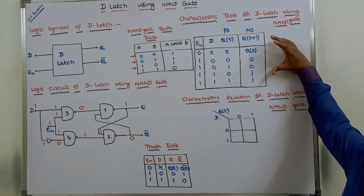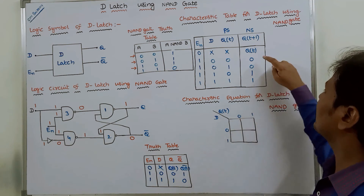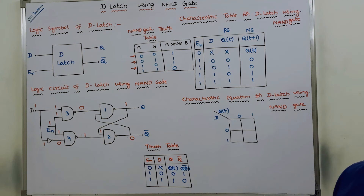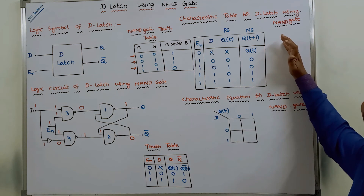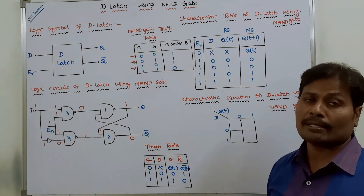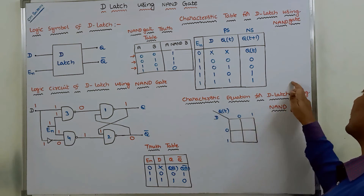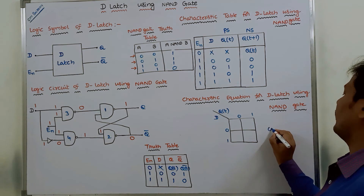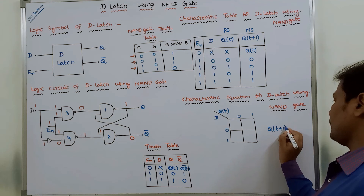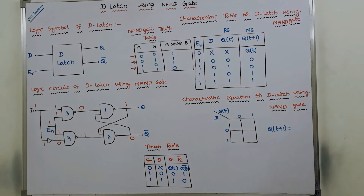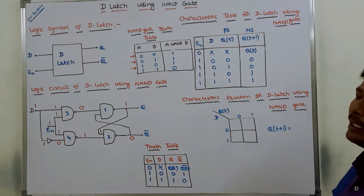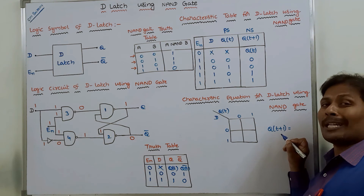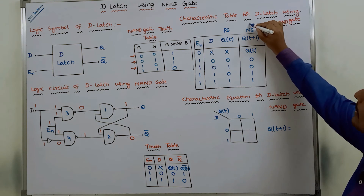By using the truth table, we construct the characteristic table. Once we construct the characteristic table, we write the characteristic equation for D latch using NAND gates — that is, we find the expression for Q(t+1), the next state. To find the characteristic equation Q(t+1) for a D latch, we observe the Q(t+1) column and note where the 1s are present.